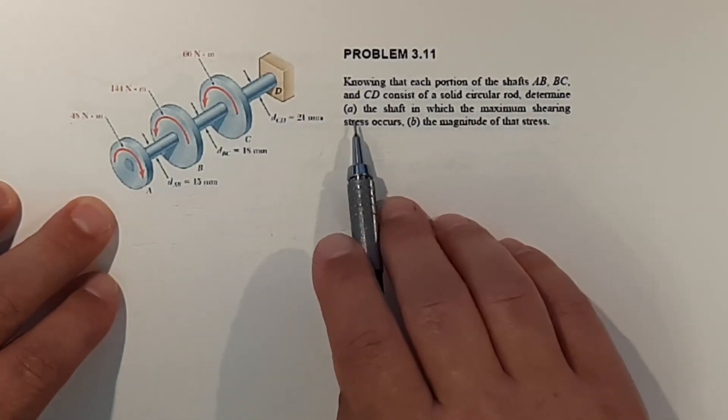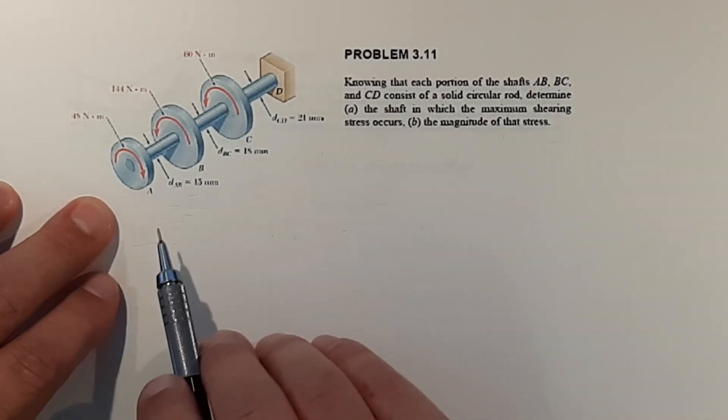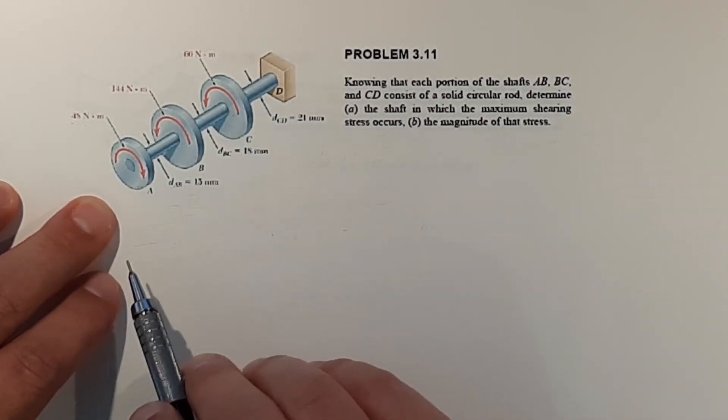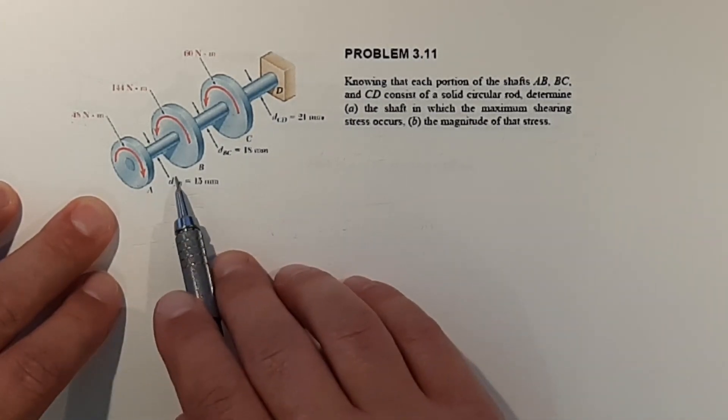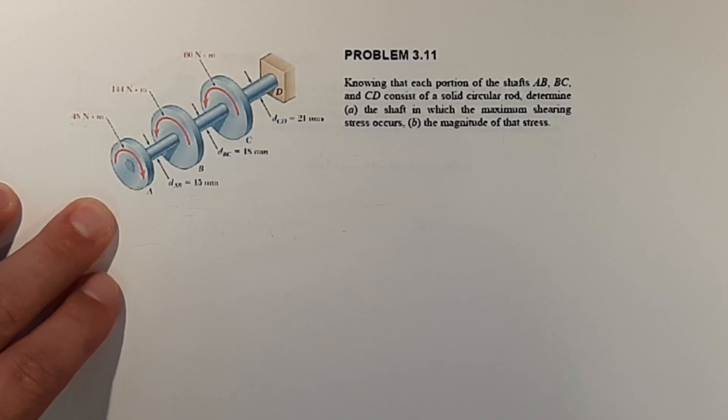This problem says knowing that each portion AB, BC, and CD consist of a solid cylindrical rod, it wants us to determine which portion of the shaft has the maximum stress that occurs in it, and then what is the magnitude of that stress.